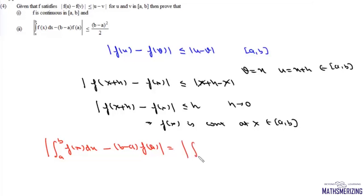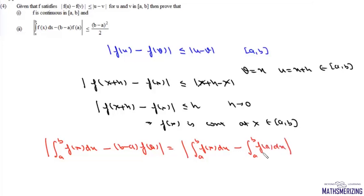We rewrite this as the integral from a to b of f(x)dx minus the integral from a to b of f(a)dx, because f(a) is constant, so integrating it simply gives (b - a).